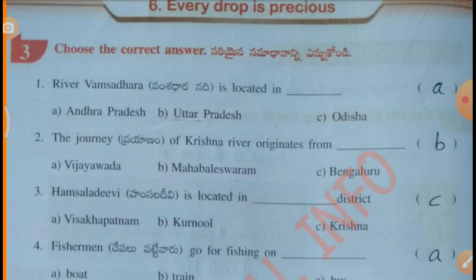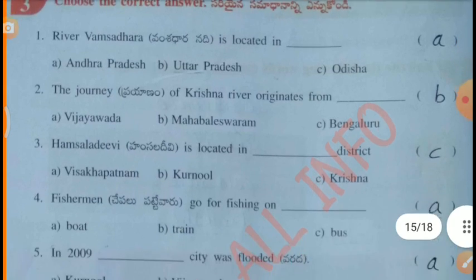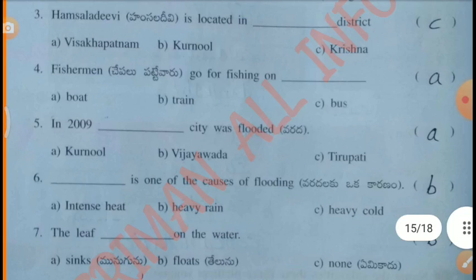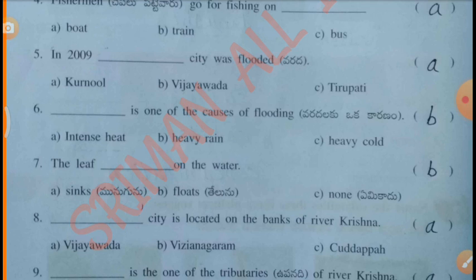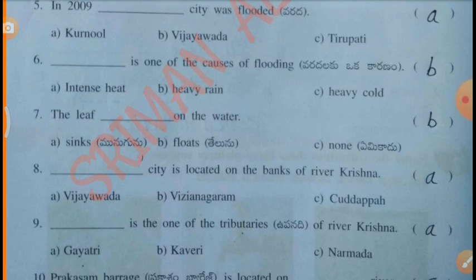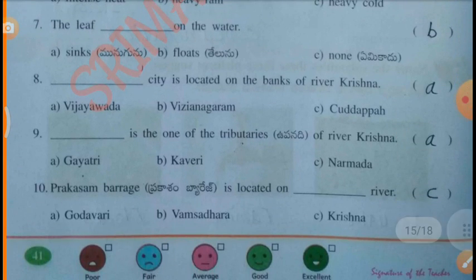Choose the correct answer. First: River Vamsadhara is located in Andhra Pradesh. Second: The journey of Krishna river originated from Mahabaleshwara. Third: Amsaradivi is located in Krishna district. Fourth: Fishermen go fishing on a Boat. Fifth: In 2009, Kurnool city was flooded. Sixth: Heavy rain is one of the causes of flooding. Seventh: The leaf floats on water. Eighth: Vijayawada city is located on the banks of river Krishna. Ninth: Gayatri is one of the tributaries of river Krishna. Tenth: Prakasham Barrage is located on the Krishna river.